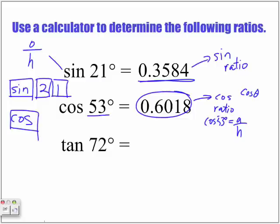Lastly here, tangent of 72 degrees. Type it into our calculator, we get the value 3.0777.